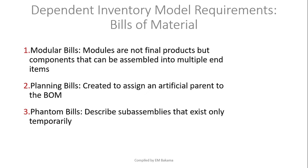There are three types of bills of material. First, modular bills — these are BOMs for modules, which are components of a final product but not the final product itself. For example, tires are a module of a car. Similarly, a computer motherboard is a component manufactured separately and assembled into the final computer product.